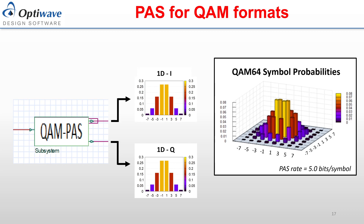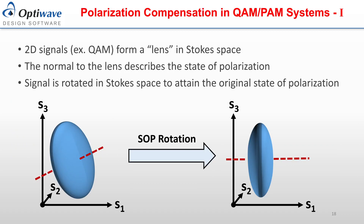An example of a 64 QAM system with dual polarization and probabilistic amplitude shaping will be demonstrated at the end of this presentation. A new polarization compensation component was implemented in OptiSystem to address demultiplexing probabilistic amplitude-shaped signals. This component also works for uniform QAM and PAM formats and performs the procedure in Stokes space. When visualized in Stokes space, two-dimensional formats such as QAM form a lens shape, and the normal to this lens describes the state of polarization. To demultiplex, the signal is rotated in Stokes space to align this normal to the original state of polarization.